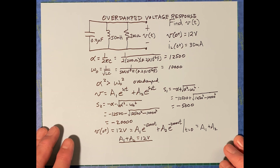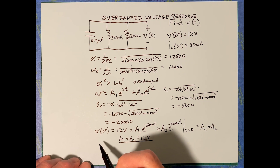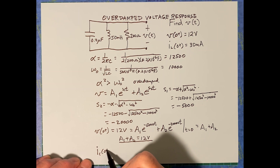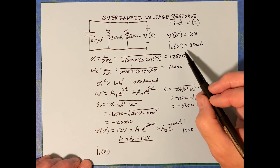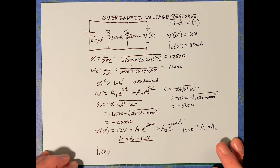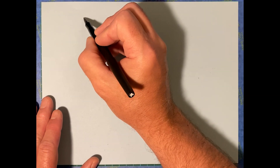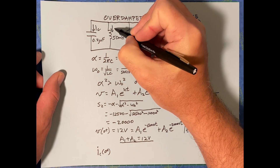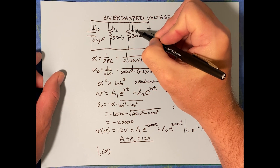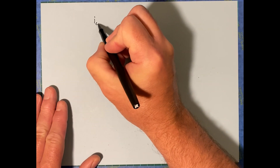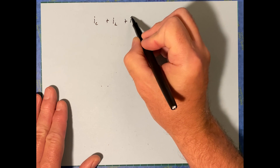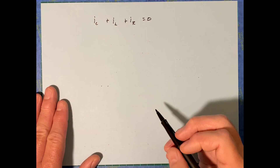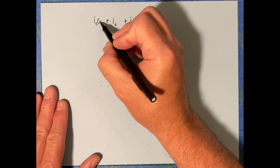We also need a second equation. For that we need i_C at zero-plus, but we were given i_L, not i_C. We can still figure it out. Using KCL at the top node: i_C, i_L, and i_R all sum to zero. This is true at any point in time, so it will be true at zero-plus.